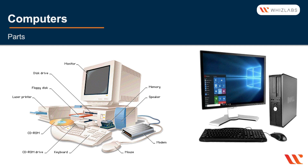Let's look at the parts of the computer. On the left is a classic, really old computer with a monitor, keyboard, mouse, modem, printer, disk drives, memory, and speakers. Some of those items are now redundant and no longer exist. On the right is a Dell Optiplex desktop, one of the most common computers used in offices today.